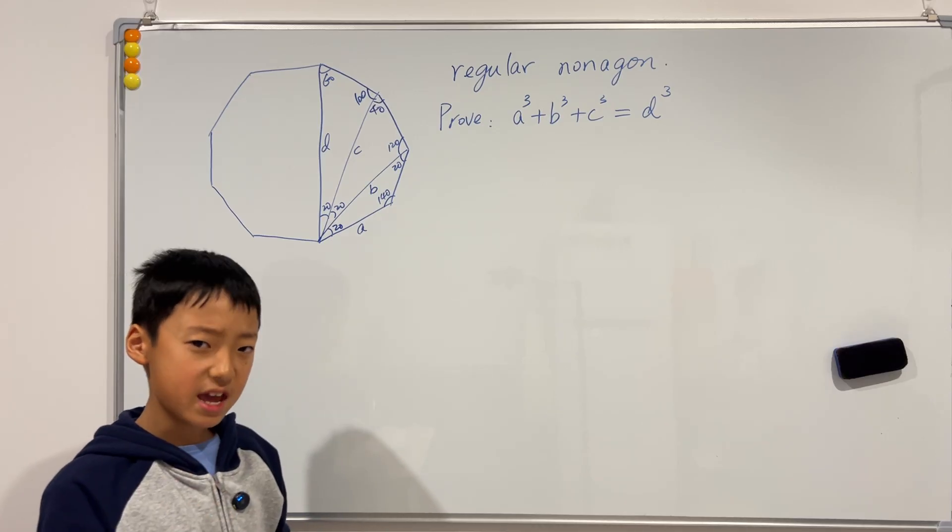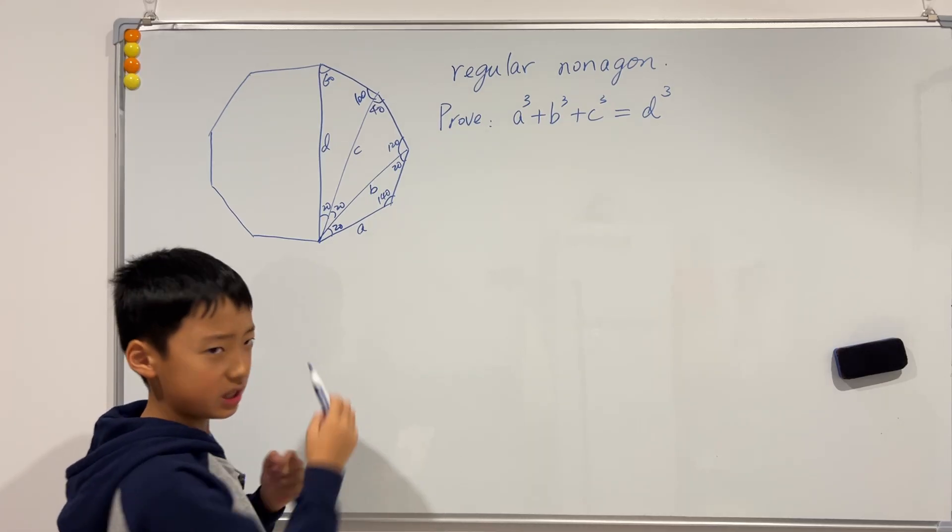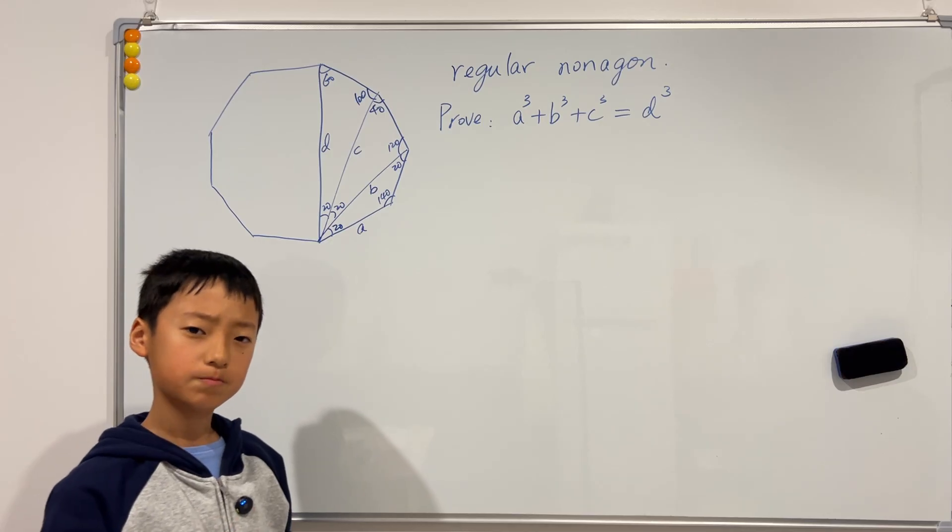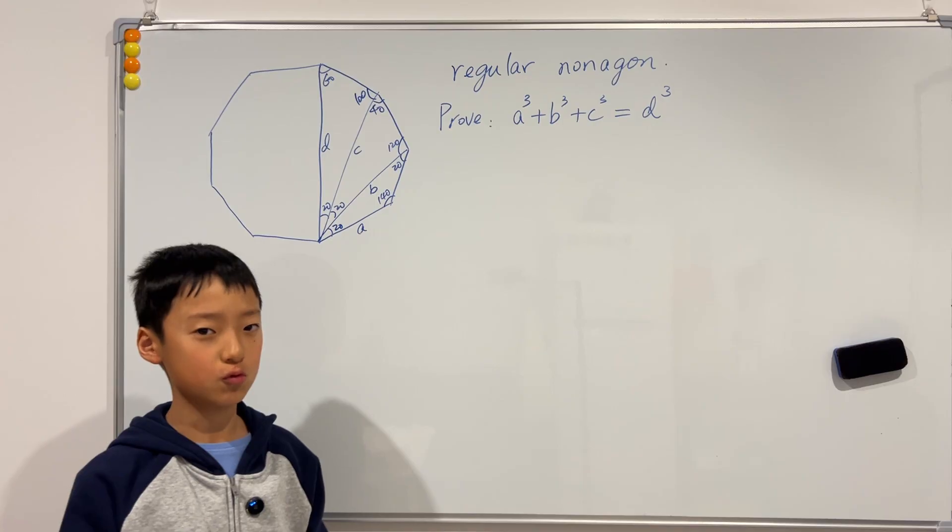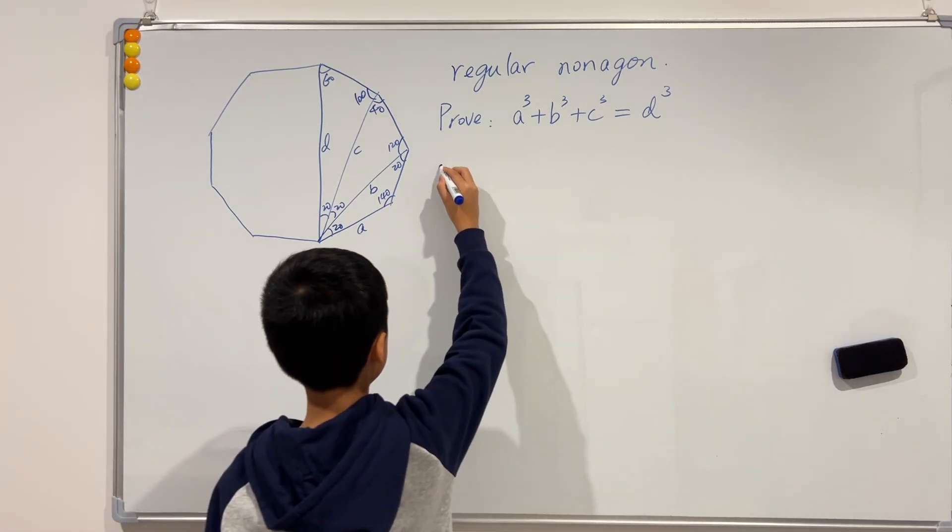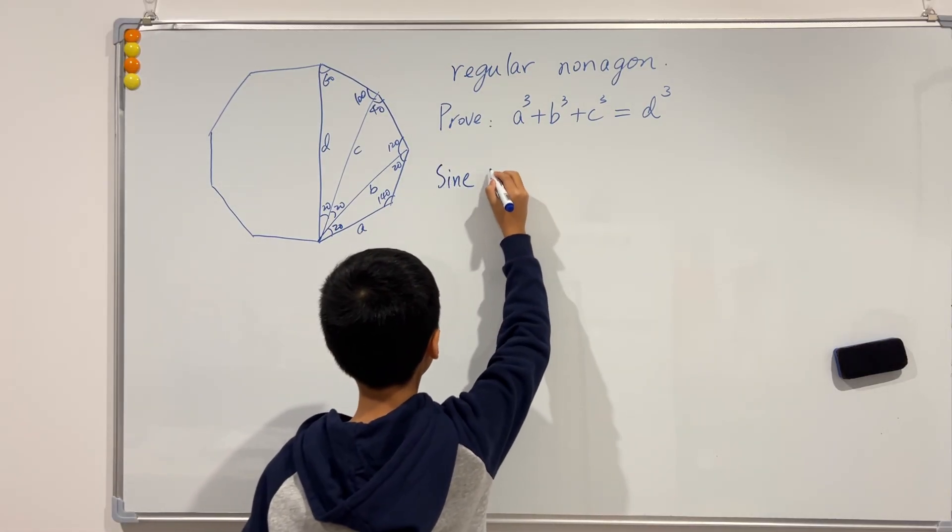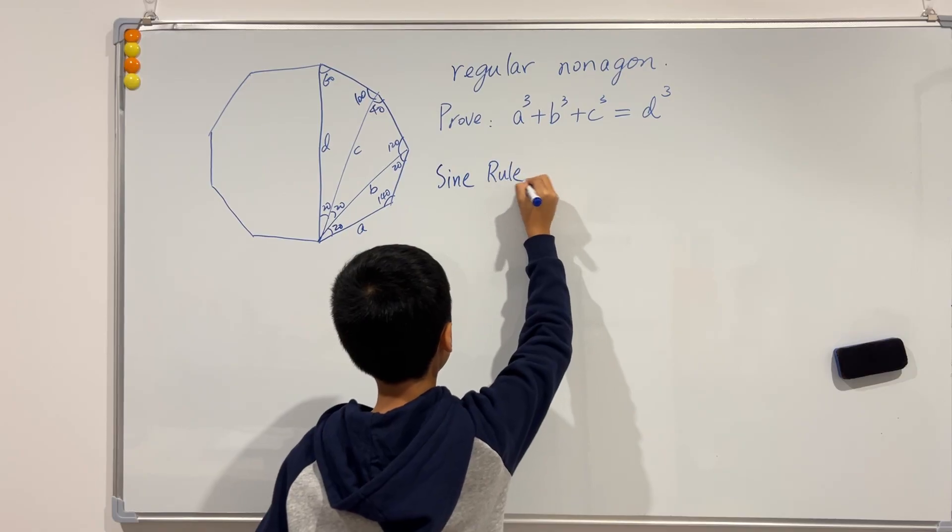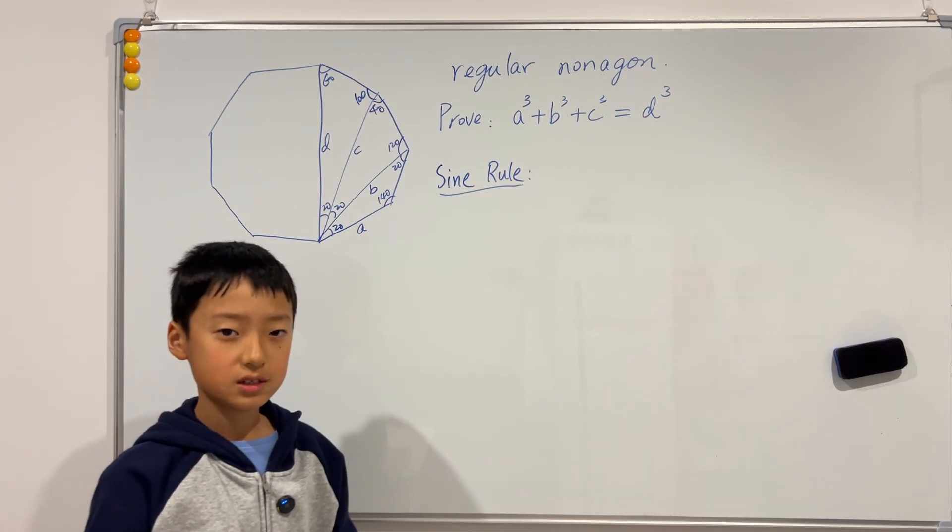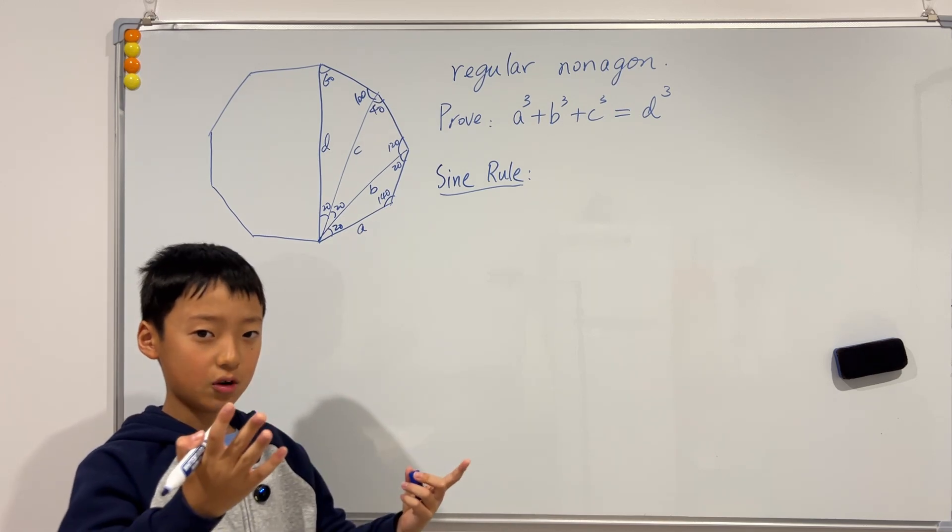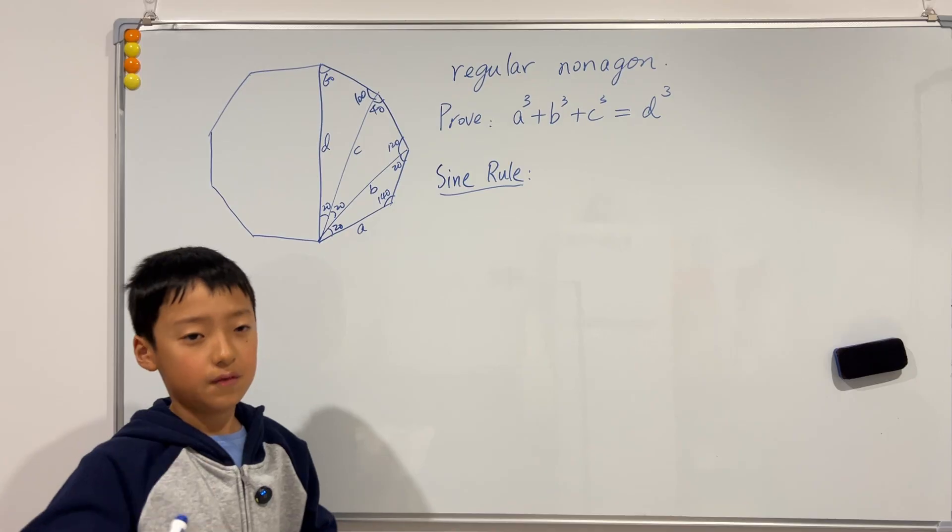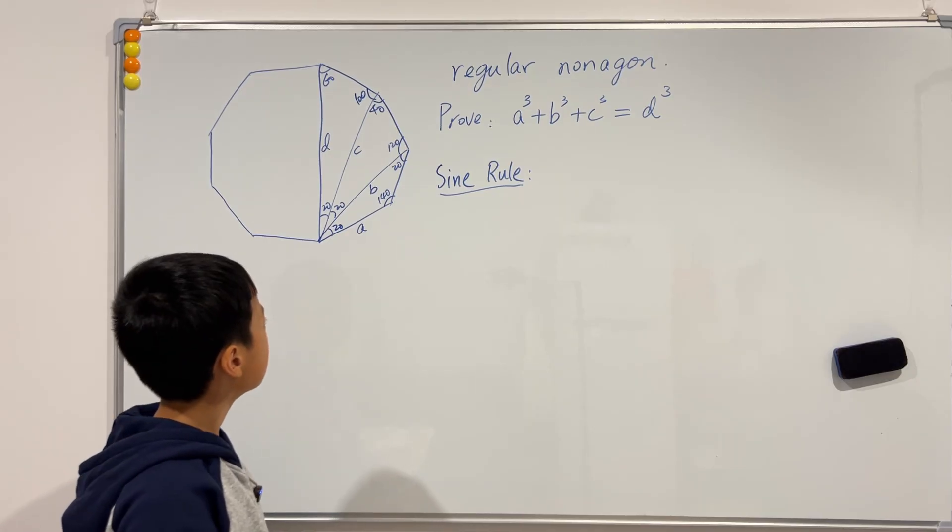So we need a way to connect these four sides. But how? Well I'm going to show you. We're actually going to need sine rule, so I'm going to write it. And if we forgot what sine rule was, it is just a over sine of the opposite angle equals b over sine of the opposite angle.